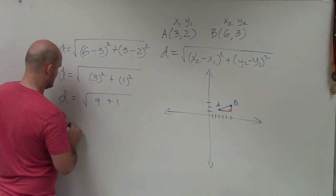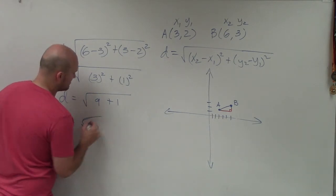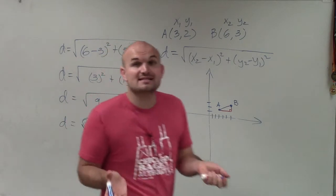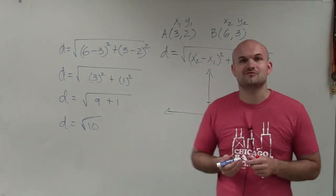Then I can add these up, d equals the square root of 10. Now I can't simplify the square root of 10 any further, so that is going to be my distance by applying the distance formula.